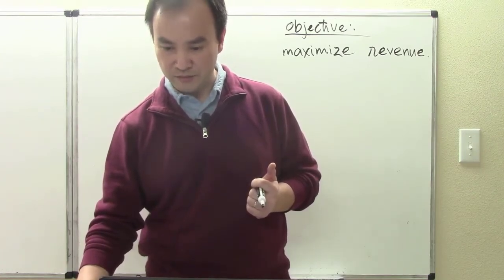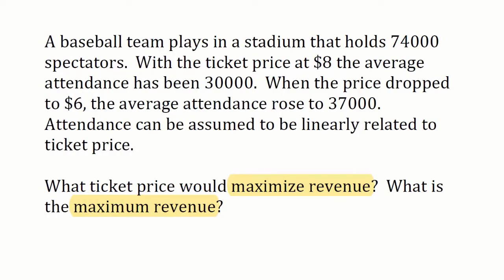Let me swing back to the computer screen to track down some further information. A baseball team plays in a stadium that holds 74,000 spectators — that's the number of guests it can hold to come and watch the game. With tickets priced at $8, the average attendance has been 30,000. The term attendance here is just a different way of calling the number of tickets we can sell — 30,000 tickets will be sold when selling at $8 per ticket.